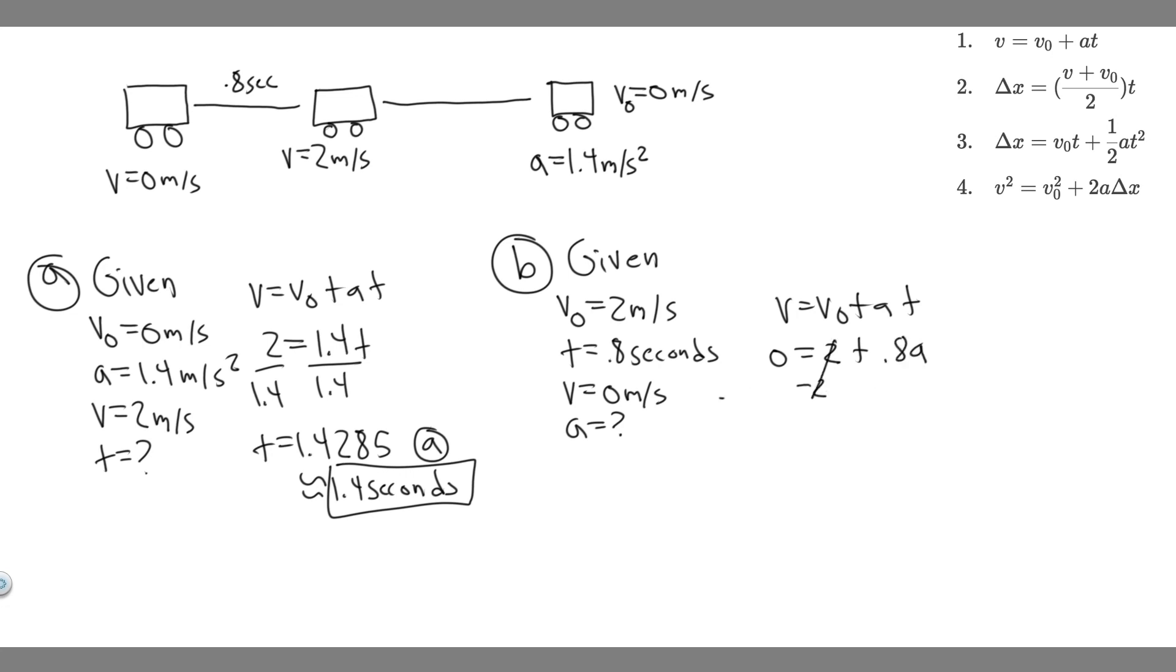So we want to minus 2 from both sides. Minus 2 equals 0.8 a, and just solve for a. So divide by 0.8.